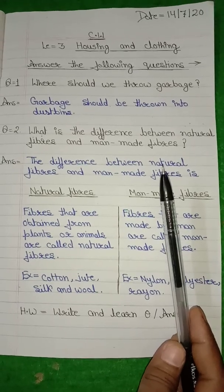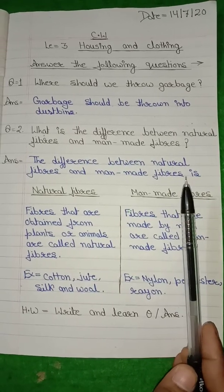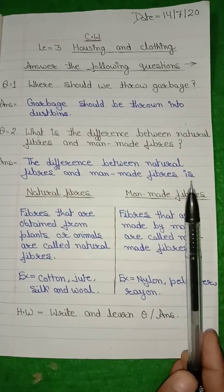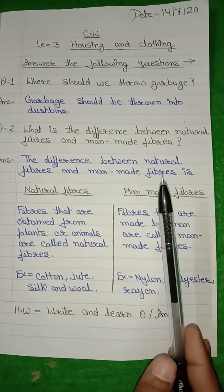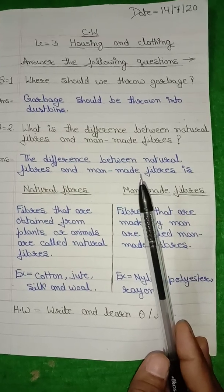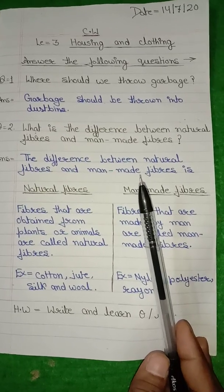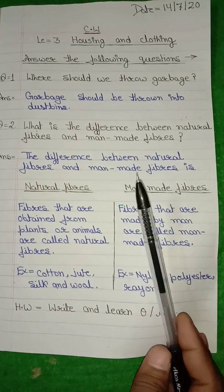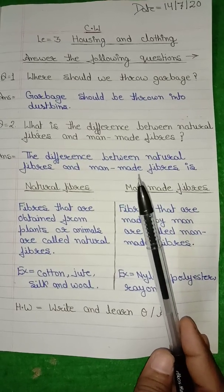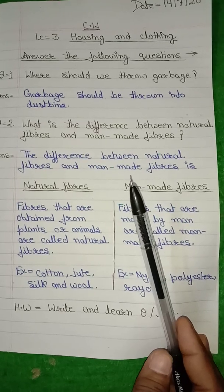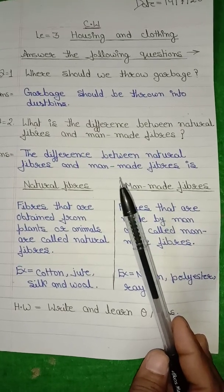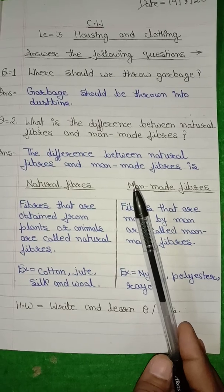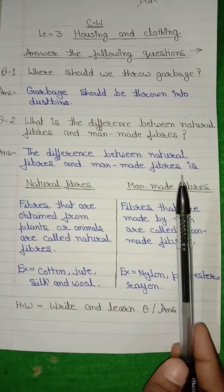On the other hand, man-made fibers — fibers that are made by men are called man-made fibers. Jo humen natural tarike se nahi milta, insaan use banate hain — woh man-made fibers hote hain. Examples of man-made fibers are nylon, polyester, rayon, and acrylic. Nylon se rope ban sakti hai. Polyester se kapde bante hain.